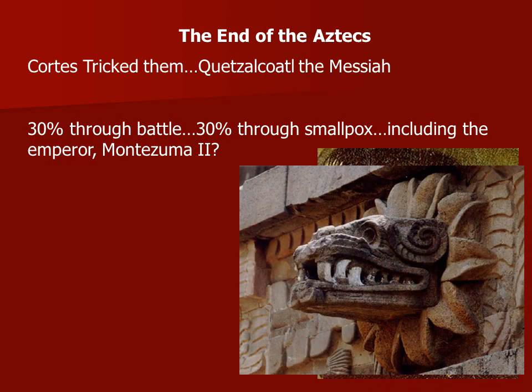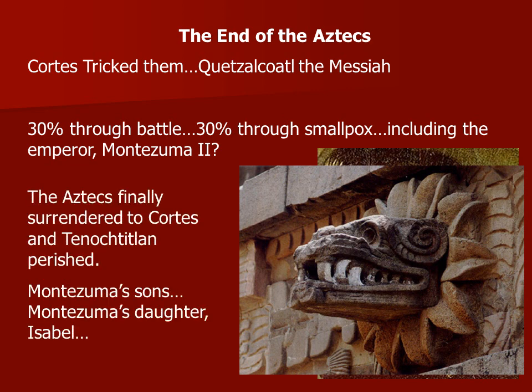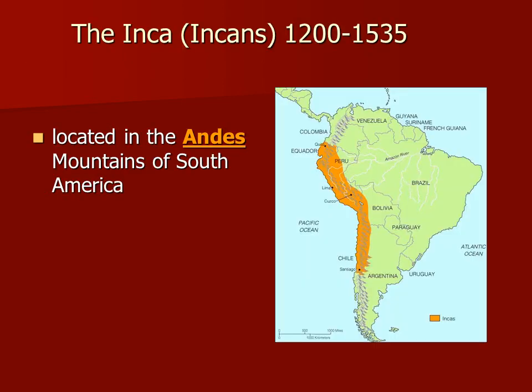The city eventually came back as Mexico City. At the Aztec ruins you can still find statues of the god Quetzalcoatl. Montezuma's sons were all killed. Cortez married Montezuma's daughter Isabel and they had a child together, but Isabel then simply vanishes from the historical record — we have no idea what happened to her or the child.